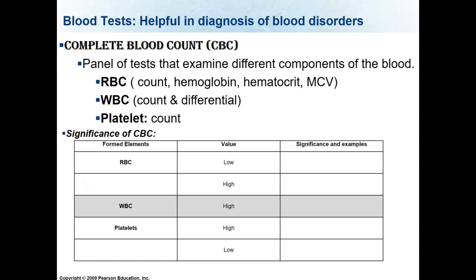Blood tests are helpful in diagnosing blood disorders. The main one is the CBC — the complete blood count. When your doctor orders the CBC, it comes in three parts: the red blood cell component, which includes the count, hemoglobin, hematocrit, and MCV (size of your red cells); the white blood cell component, which is the white blood cell count and differential looking at the different types of white cells; and then the platelet count.